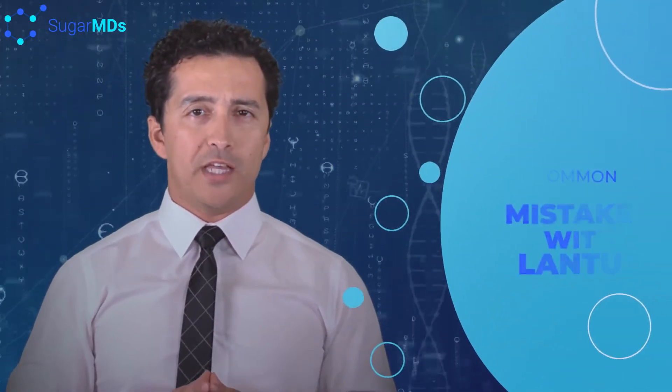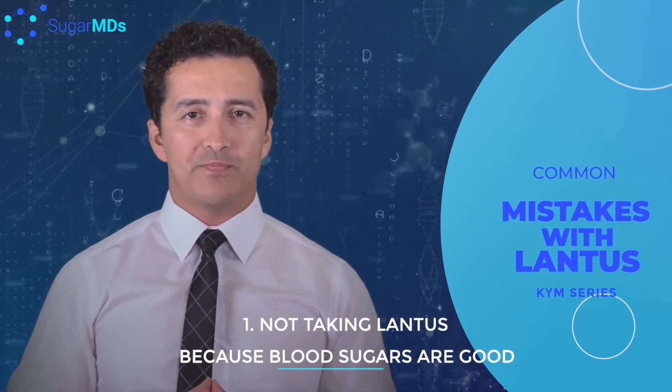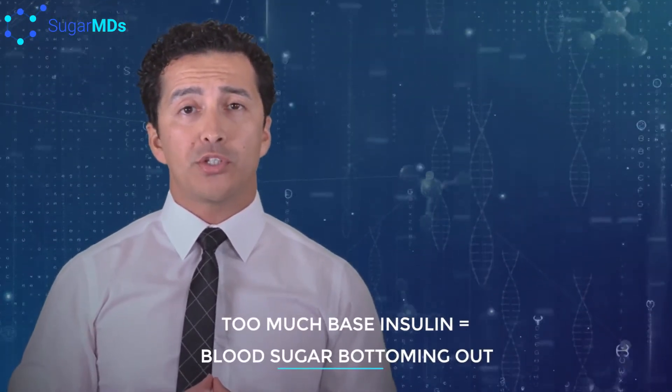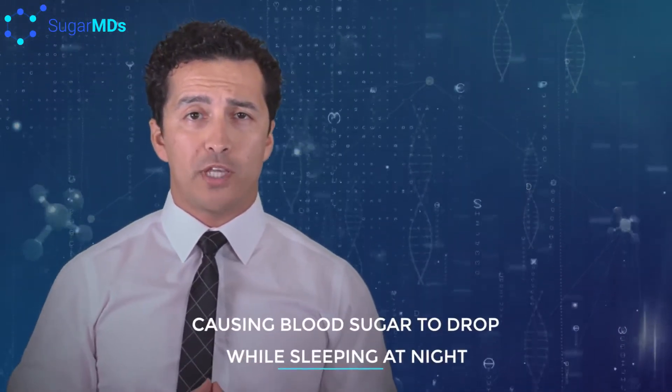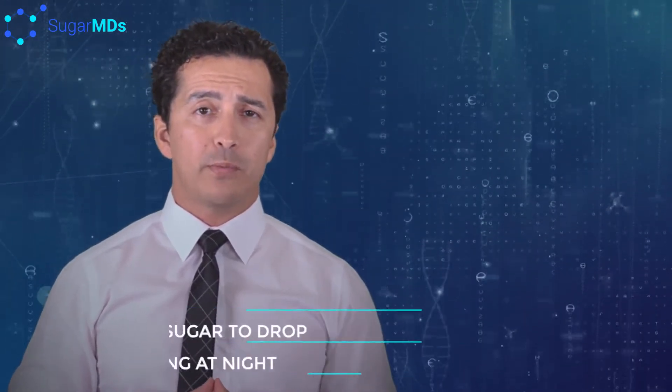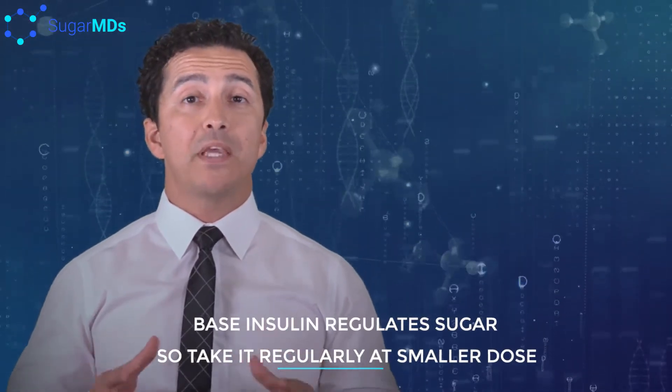A lot of people make certain mistakes with Lantus. For example, they will not take their Lantus just because their blood sugars are good. I understand that, because sometimes they are given too much insulin to a point where when they take the insulin their blood sugar bottoms out. For example, if their blood sugar is 100 before they go to bed and if they take the Lantus, they are worried that they may wake up with 50 blood sugars.